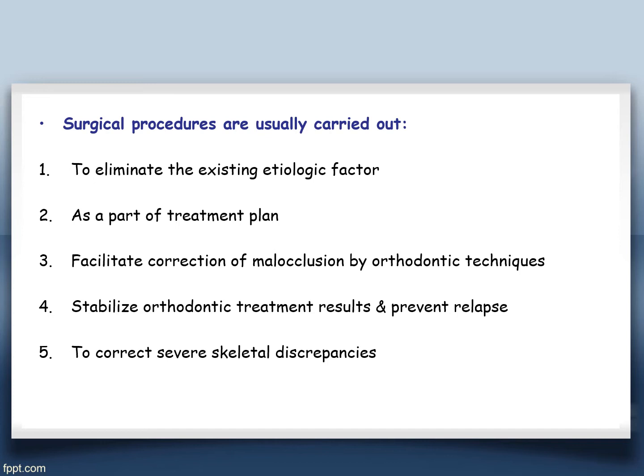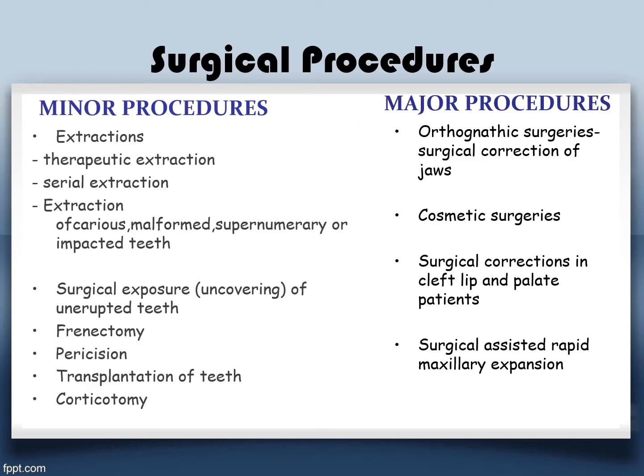Surgical procedures are usually carried out to eliminate the existing etiological factor as part of your treatment plan, facilitate correction of malocclusion by orthodontic techniques, stabilize the results of orthodontic treatment, prevent relapse, and to correct severe skeletal discrepancy. Now, what are the surgical procedures we carry out in orthodontics? They can be basically divided into minor and major.